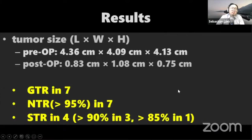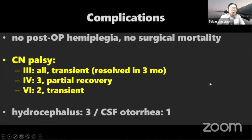The mean preoperative tumor size was 4.3 centimeters and postoperatively less than one centimeter. Gross total resection was achieved in seven patients, near total resection (more than 95%) in seven, and subtotal resection in four. Regarding complications, there was no postoperative hemiplegia and no surgical mortality. However, because we mobilized the oculomotor nerve, all patients had transient oculomotor palsy resolving in three months, with three having partial palsy and two having transient palsy.